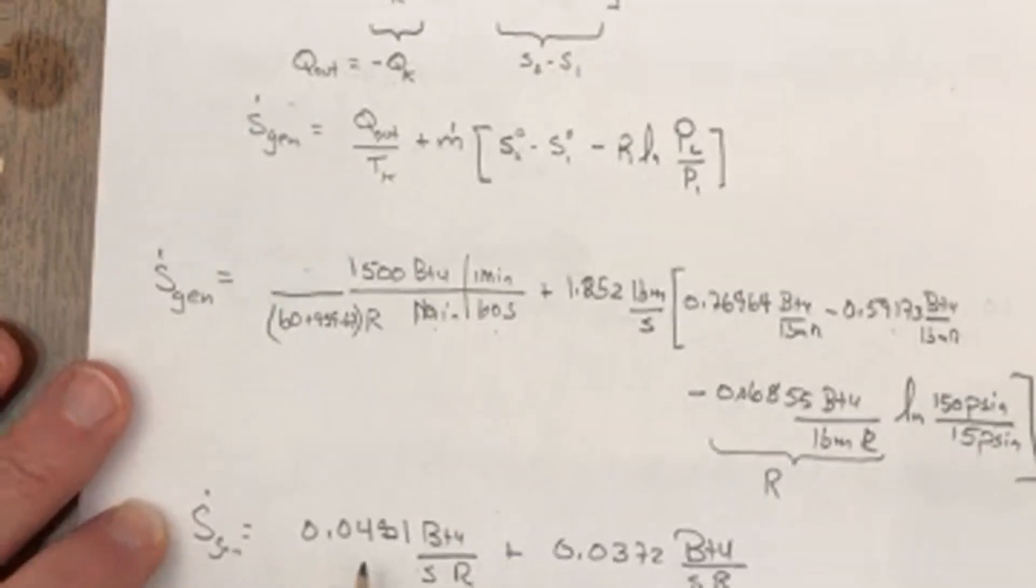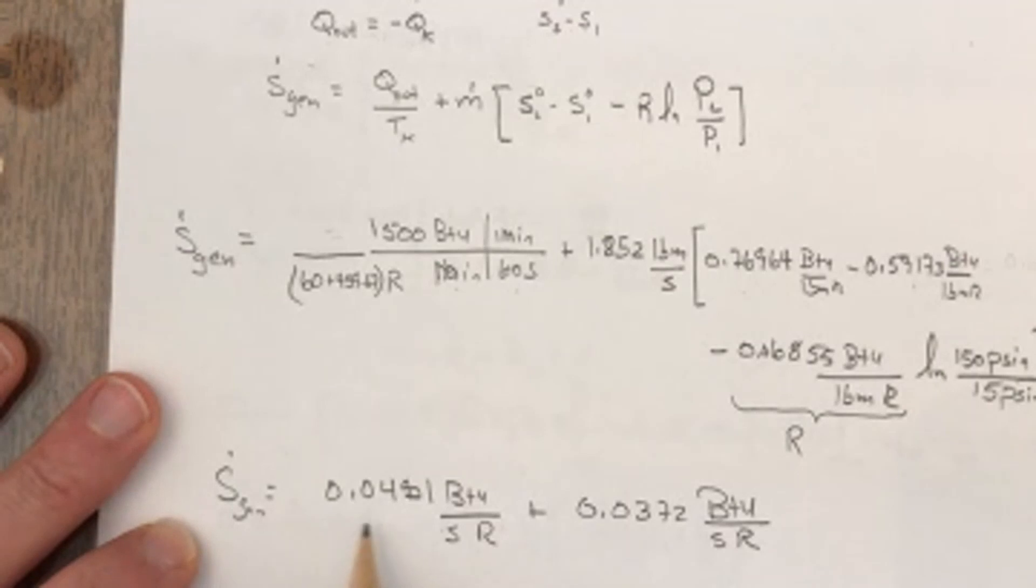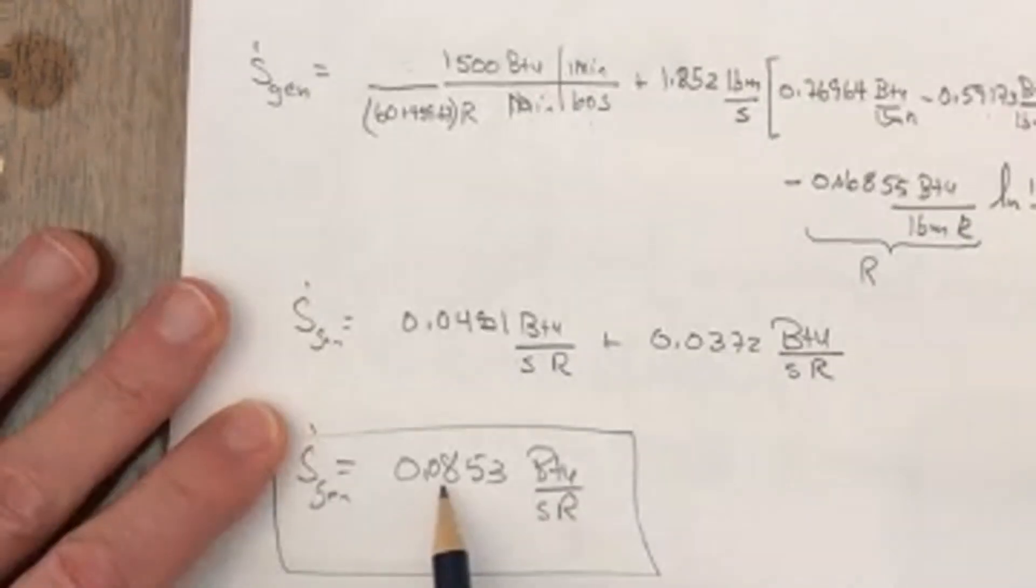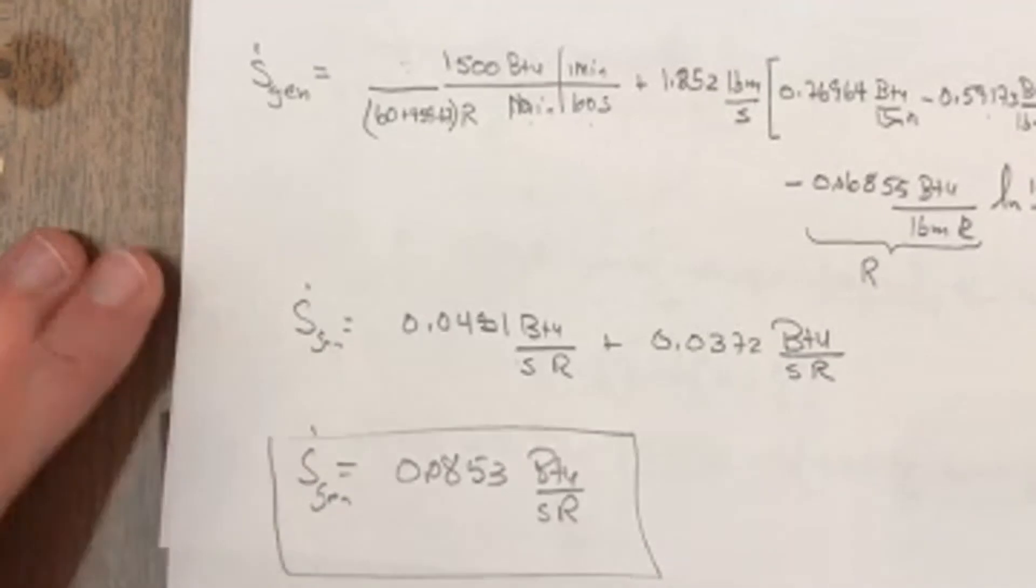So you can see that the contribution due to the heat transfer and the increase in entropy is 0.048. The contribution due to the change in state is 0.037, so a little bit smaller than the heat transfer, but together it's about 0.0853 BTUs per second Rankine.